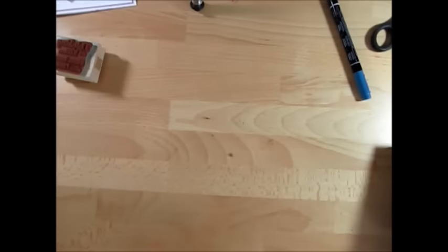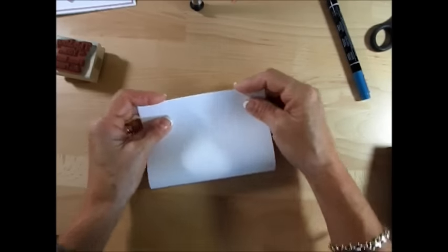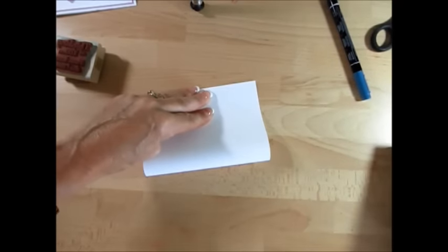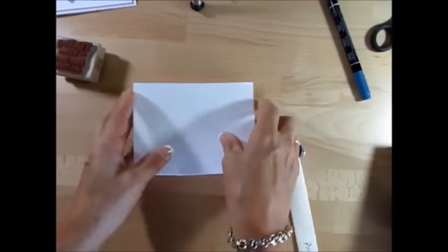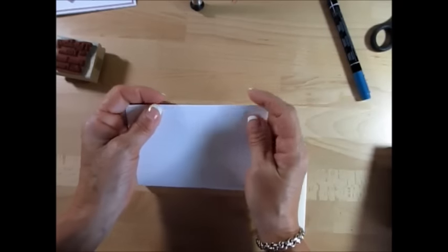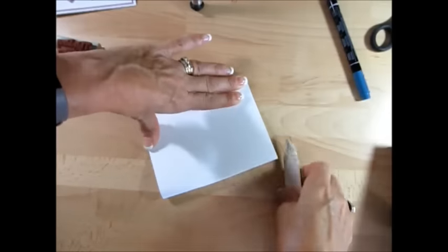First thing you want to do is take your piece of cardstock that you cut in half, that is five and a half by eleven. We're going to fold this in half and I should have a bone folder here. Let's make sure we keep that together good there.